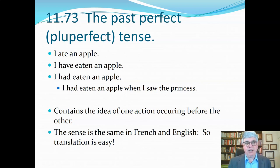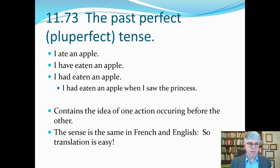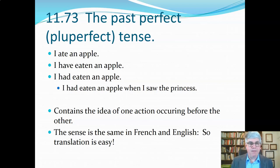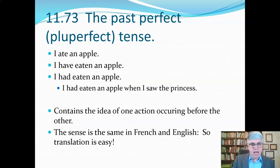Let's see how this works in English. We have the past definite tense: 'I ate an apple,' which means that at some point in the past, I ate an apple. Then we have 'I have eaten an apple,' which means some unspecified time in the past. And then we have 'I had eaten an apple,' which means I had already eaten an apple when something in the past happened.